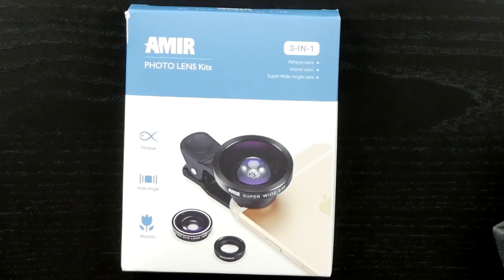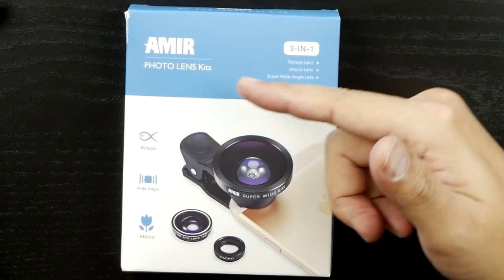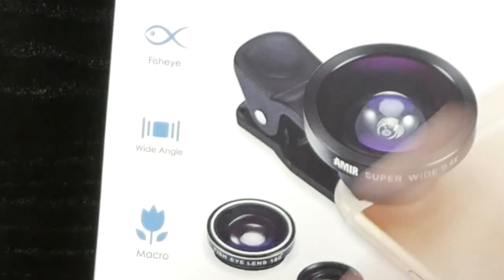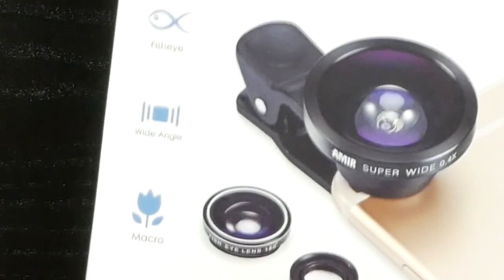Welcome back to Unboxed Junkie. My name is Matt and today we're looking at the Amir Photo Lens Kit. It's got the fisheye, the wide angle, and the macro lens.